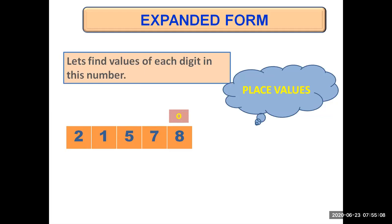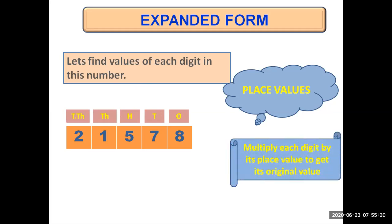The rightmost digit is eight, so eight's place value will be ones. Seven's place value will be tens. Five is at hundreds place. One at thousands place and two at ten thousands place. Now, to find the value of each digit, we will multiply each digit by its place value.